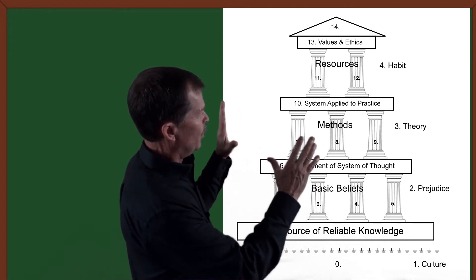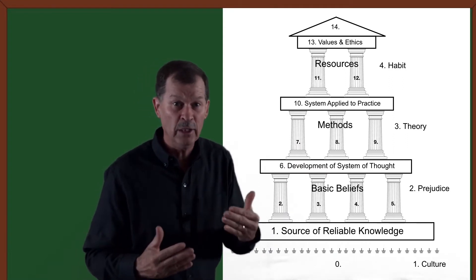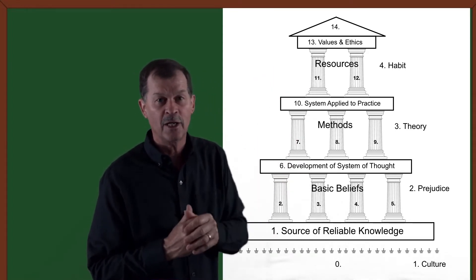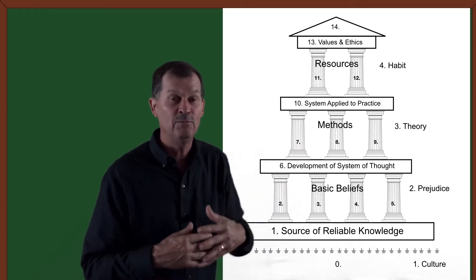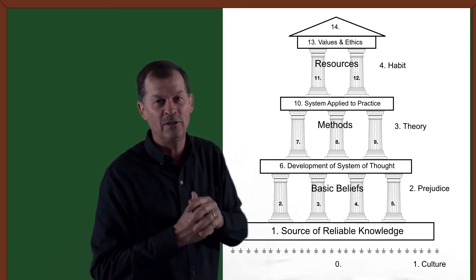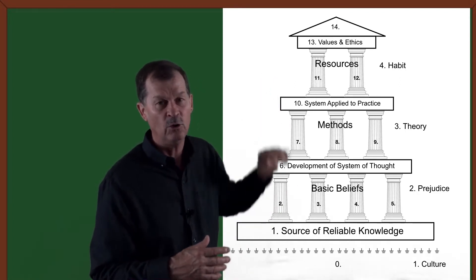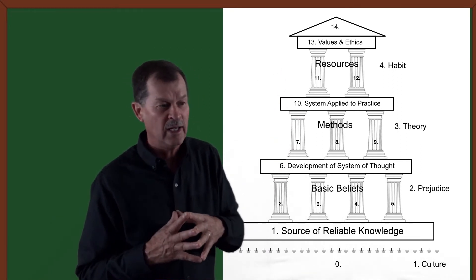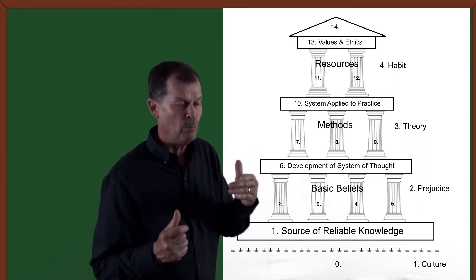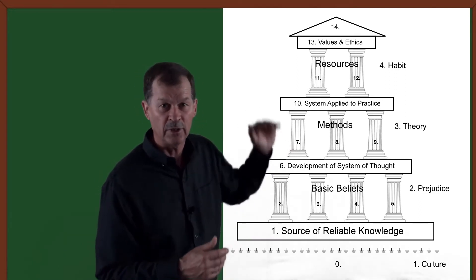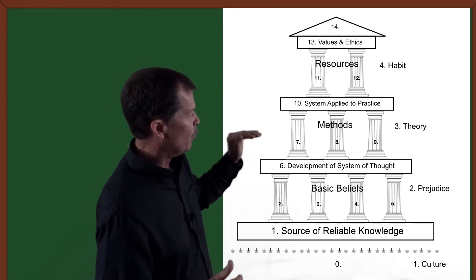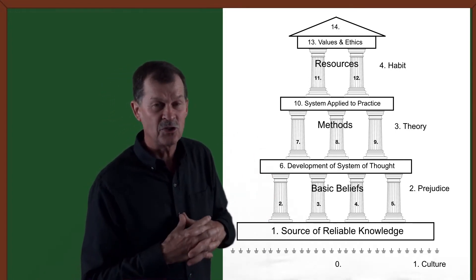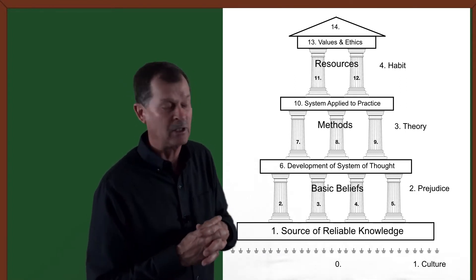Each one of us has built, either consciously or subconsciously, a structure we're implementing to understand the world through. A lot of times we don't even know we've built a structure or that we've been given one. Through our educational model we've been educated in a structure of thinking without knowing it was a structure. At times, that structure given to us through education is not the structure we would build ourselves if we knew we had a choice. This series is about the choices we can and must make about building our thought structure and what that leads us to — whether in the sciences, politics, economics, or even theology.